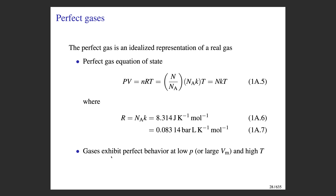In any case, the perfect gas is an idealized representation of a real gas, and it has a notably simple equation of state: PV = nRT. The four gas variables — pressure, volume, number of moles, and temperature — are related to one another through this equation of state.